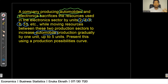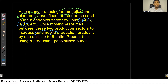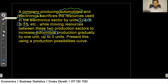The requirement is to present this scenario using a PPC, but there is a small issue. To construct the PPC, we need the relevant coordinates for both goods — specifically, when automobile production is zero, what is the total electronics production, and when automobile production is one unit, how much is electronics. These values are not given directly in the question, so we need to find them ourselves.